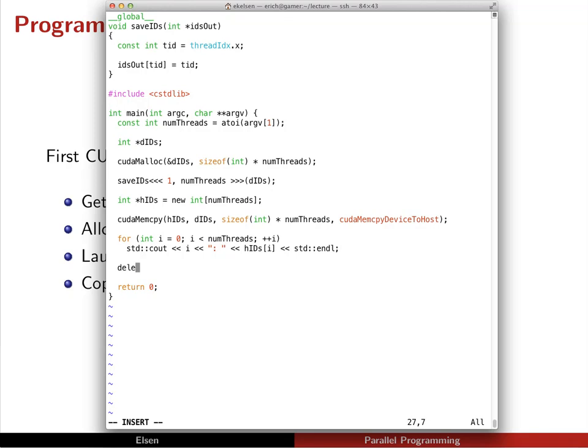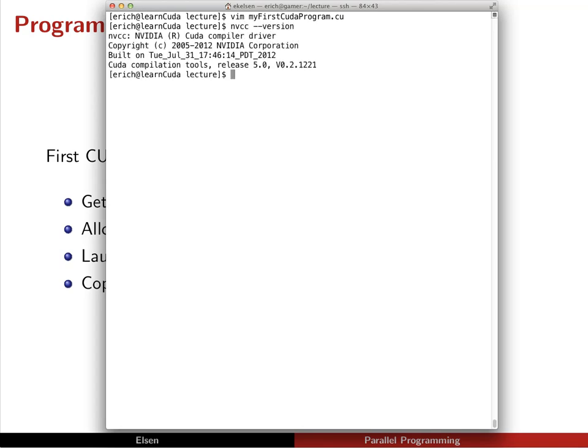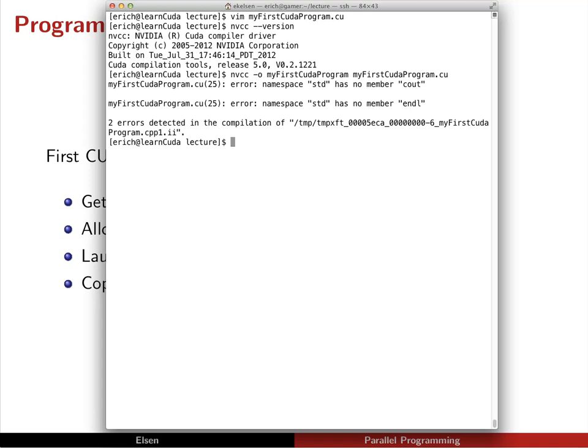Finally, we'll be good citizens and delete both the host and device memory that we allocated. In this case, just analogously to cudaMalloc, there's a cudaFree, which is similar to the normal free call, which will free memory that we allocated with cudaMalloc. Alright, so now we should be able to compile this program with NVCC. NVCC is NVIDIA's compiler. And we use it the same way that we would use GCC. We tell it the output name of the executable, we tell it the input file, and then we let it compile.